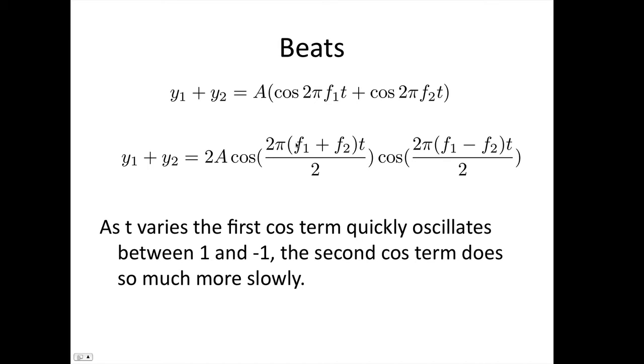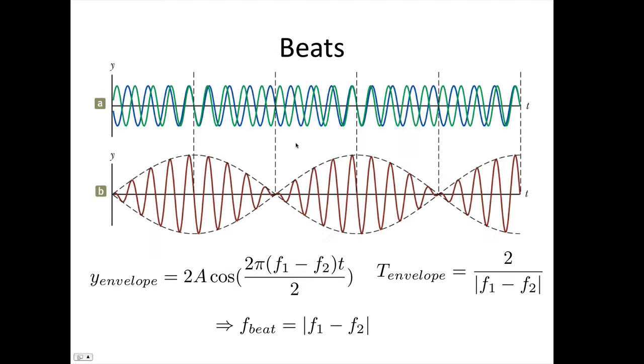This is the rapid oscillation between 1 and -1. The period for this envelope function, that's the time from here to here, is given by 2/(f₁ - f₂). That's just the inverse of this part of the function, as we've got the 2π there, telling us how long it takes to cover 2π.